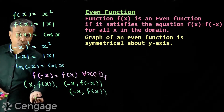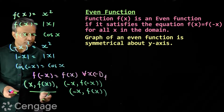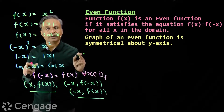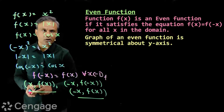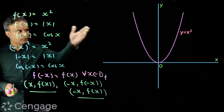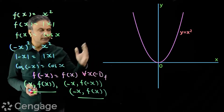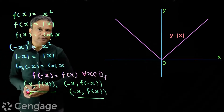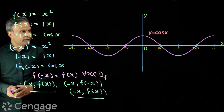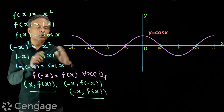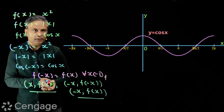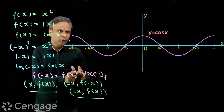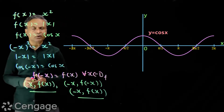If we consider some point on the graph of an even function, then there will be a point having coordinates (-x, f(x)), and these two points are symmetrical about the y-axis. We can check the graphs: the graph of f(x) = x² is symmetrical about the y-axis. The graph of f(x) = |x| is also symmetrical about the y-axis. And the graph of f(x) = cos x is also symmetrical about the y-axis, since we have the same functional value for arguments x and -x for all x in the domain.